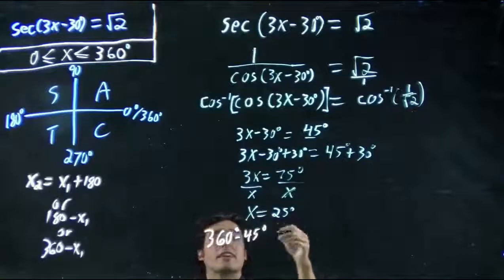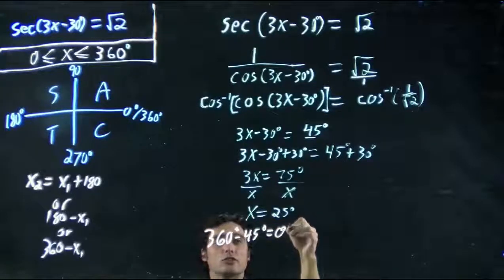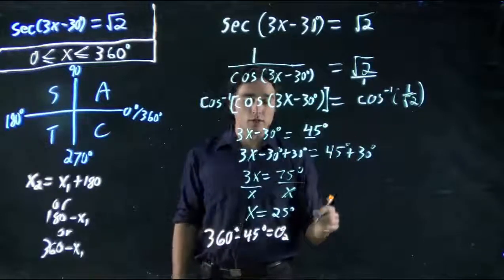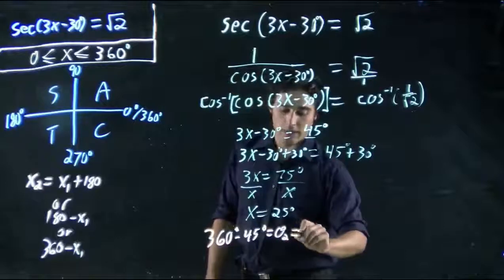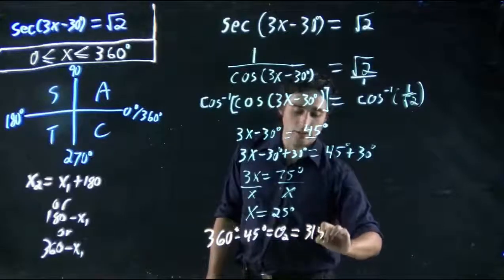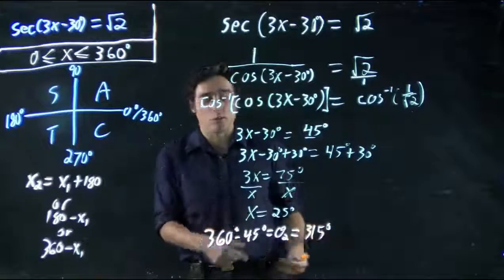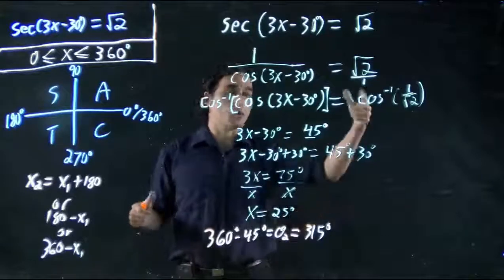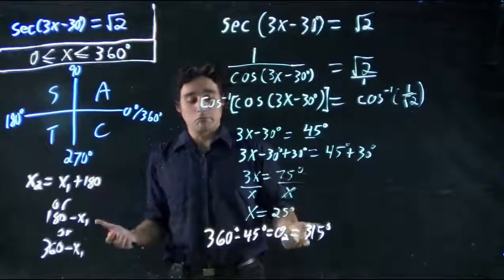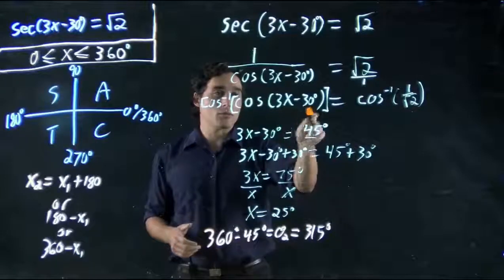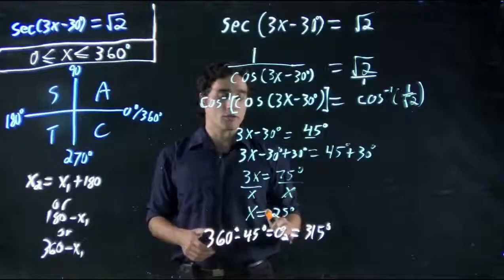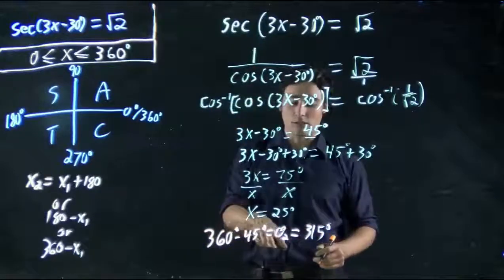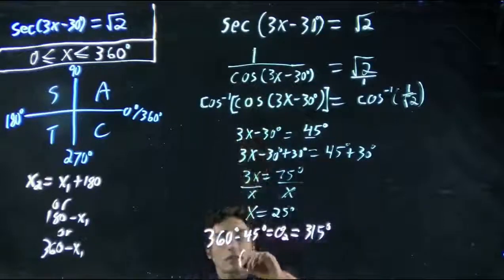That should be our other theta, we can think. Theta 2. The other possible angle that would make cos equal 1 over square root 2. So in other words, we can say that's equal to 315 degrees. All we're doing is 360 minus 45. And if we plug that into our calculator, we should find that cos of 315 equals 1 over square root 2. But that's not x. That's the term we'd put in here.